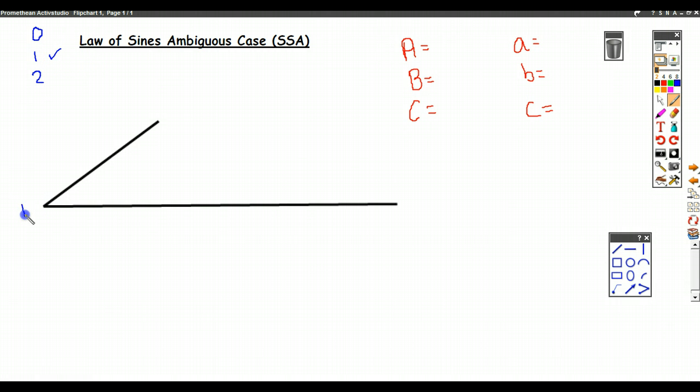So again, let's get our setup here. Let's say that's going to be angle A, that will be angle B. We need to figure out where angle C would have to go on this line, and that means that this is side C.